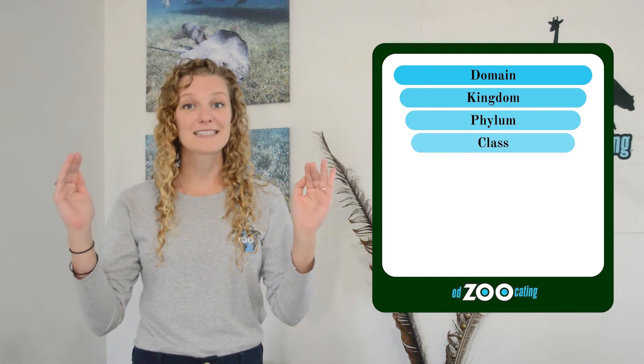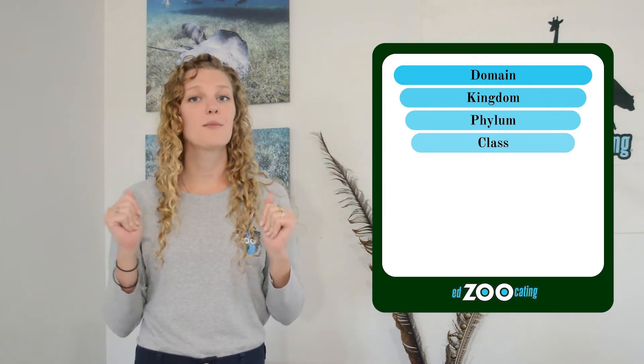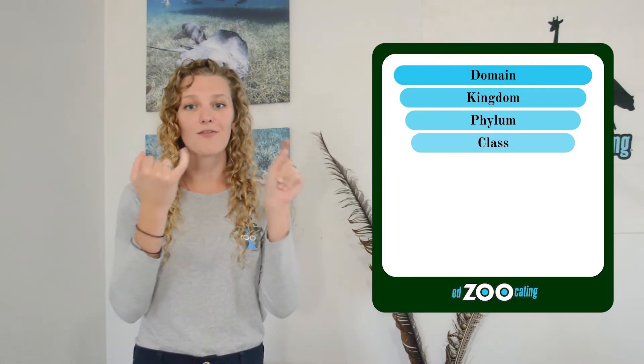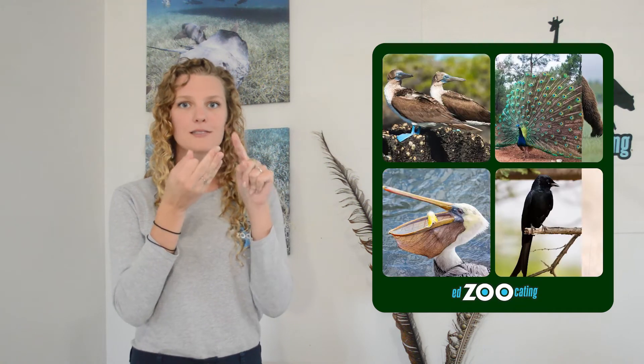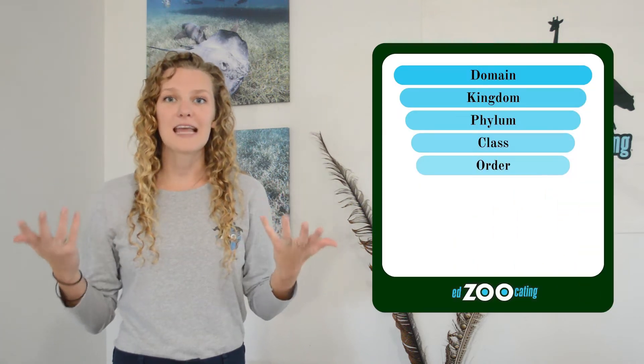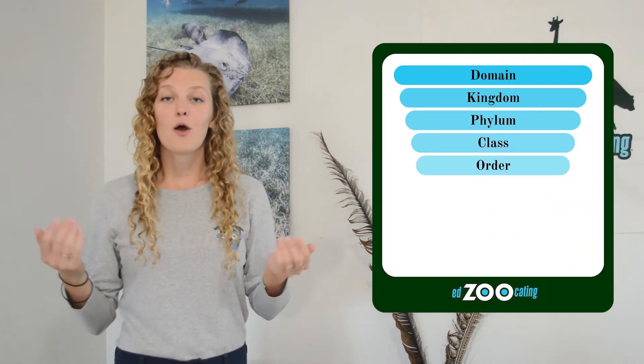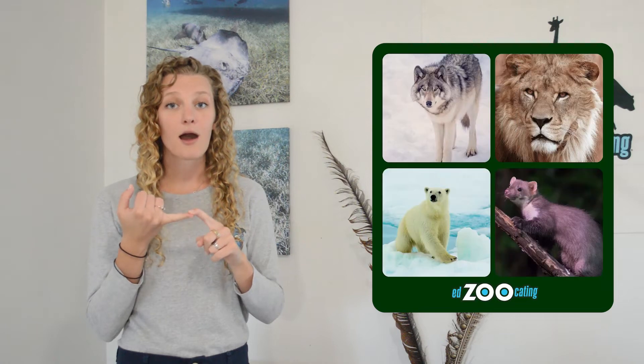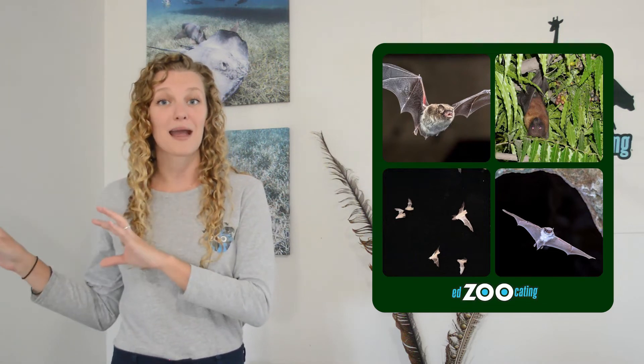Now we're going to focus mostly on our vertebrates. Below phylum, we have our classes. For our vertebrates, some of the classes we might have are mammals, birds, reptiles, amphibians, and fish. Now focusing mostly on our mammal class, below class we have our orders. And within the mammal class, we have orders like Carnivora, primates, rodents, and bats. This is where we're going to start separating different groups of mammals.